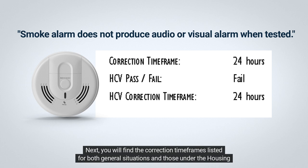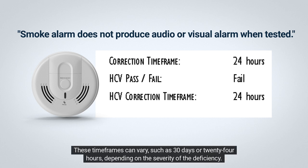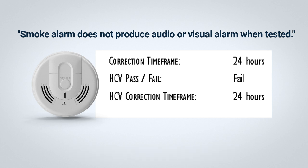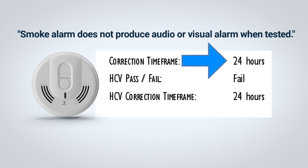You will find the correction timeframes listed for both general situations and those under the Housing Choice Voucher Program. These timeframes can vary, such as 30 days or 24 hours, depending on the severity of the deficiency. This life-threatening deficiency with the smoke alarm requires correction within 24 hours.